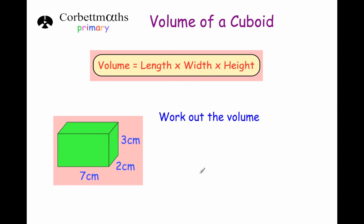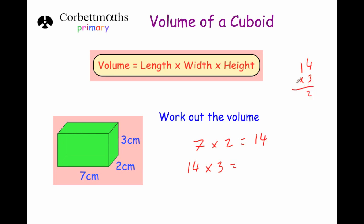Here's a typical question: work out the volume of a cuboid with a length of 7 centimetres, a width of 2 centimetres, and a height of 3 centimetres. To get the volume we do 7 times 2, which equals 14, then 14 times 3. Three times 4 is 12, put the 2 down and carry the 1; 3 times 1 is 3 plus 1 is 4. So the volume is 42 centimetres cubed.